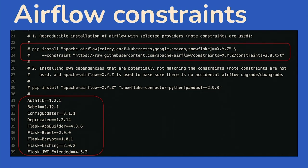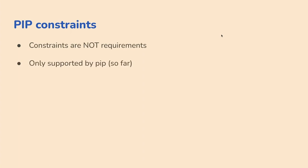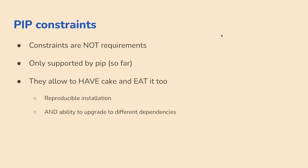Constraints allow you to install Airflow in a specific version with specific providers using those constraints, but they don't block you from upgrading later. This is the trick we use. Constraints are only supported by pip — I've been discussing adding them to other tools in PRs and issues, but that's been met with some resistance, as it's a very specific requirement of large software installations like Airflow.